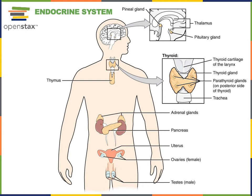The adrenal glands produce stress response hormones. They are organized into two distinct regions that produce different hormones. The outer layer is the cortex, and the adrenal cortex produces the steroid glucocorticoid hormone cortisol, whereas deep within the adrenal gland, a region known as the adrenal medulla produces epinephrine, also known as adrenaline.